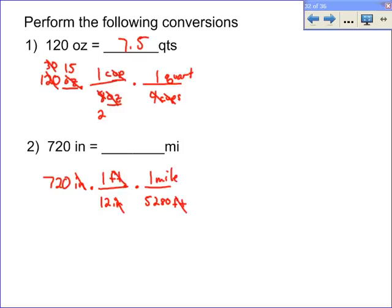So 720 times 1 times 1, and then 12 times 5,280 on the denominator. I'm going to do some simplification. 12 goes into 720 60 times. Obviously, 10 goes into both these, 528 and 6.